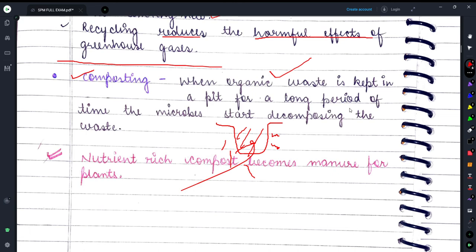Here it is written: when organic waste is kept in a pit for a long period of time, the microbes start decomposing the waste. Nutrient-rich compost becomes manure for the plants.